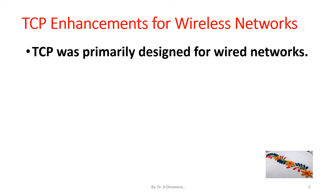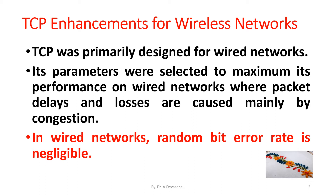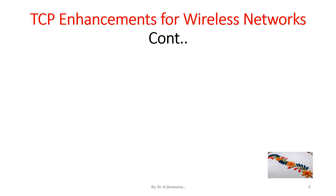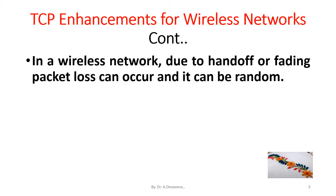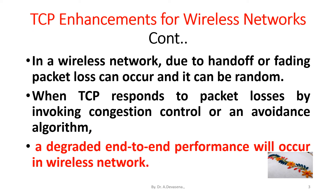TCP was primarily designed for wired networks. Its parameters were selected to maximize its performance on wired networks where packet delays and losses are caused mainly by congestion. In wired networks, random bit error rate is negligible. In wireless networks, due to handoff or fading, packet loss can occur and it can be random. When TCP responds to packet losses by invoking congestion control or avoidance algorithm, a degraded end-to-end performance will occur in wireless networks.